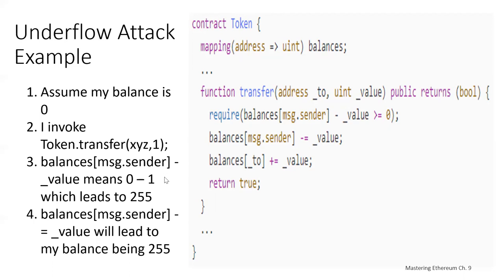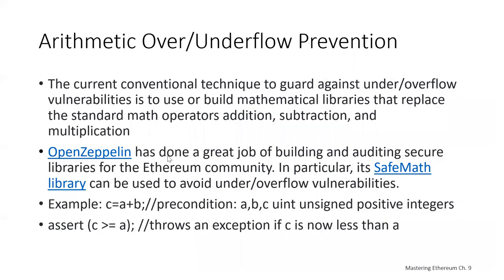Our solution is to check inputs and outputs to make sure we don't overrun the range. There are some very good mathematical libraries that replace the standard Ethereum math operators for addition, subtraction, and multiplication. OpenZeppelin in particular created a very nice SafeMath library. For example, if we want to compute C equals A plus B, where A, B, and C are all unsigned positive integers, how do we ensure we don't run into an overflow or underflow?